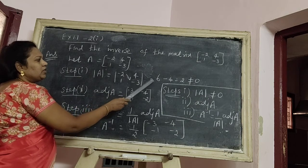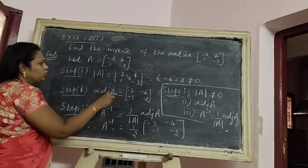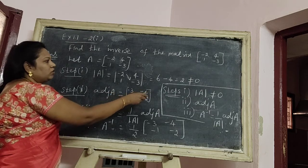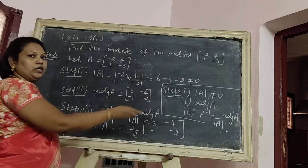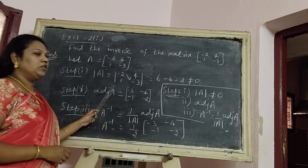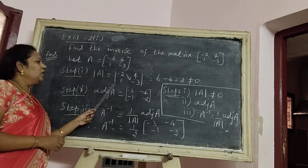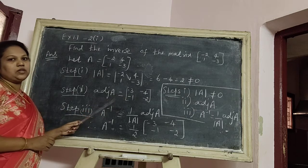Minus 2 into minus 3 equal to 6. Then 1 into 4 equal to 4, that is minus 4. 6 minus 4 equal to 2, not equal to 0. We have already discussed this. Not equal to 0 means the inverse matrix exists.